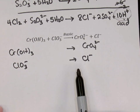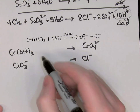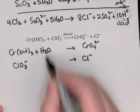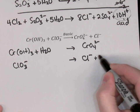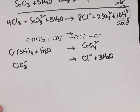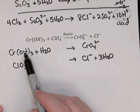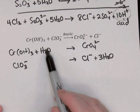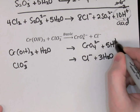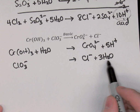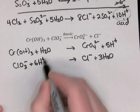Balance oxygens using water. The first equation has 3 oxygens on the left and 4 on the right, so we add 1 water molecule on the left. The second equation has 3 oxygens on the left and none on the right, so we add 3 water molecules on the right. Then balance hydrogens with H⁺: the first equation now has 5 hydrogens on the left and none on the right, so add 5 H⁺ on the right. The second has 6 hydrogens on the right and none on the left, so add 6 H⁺ on the left.